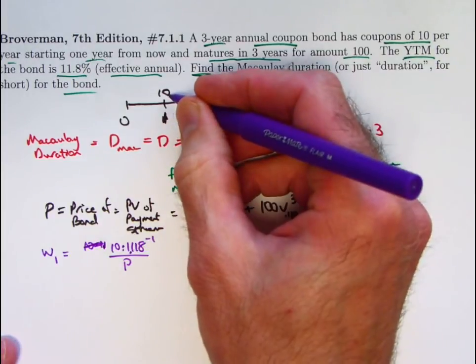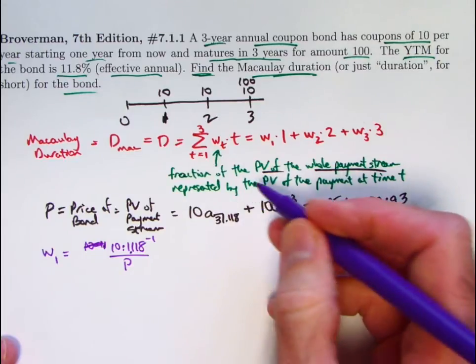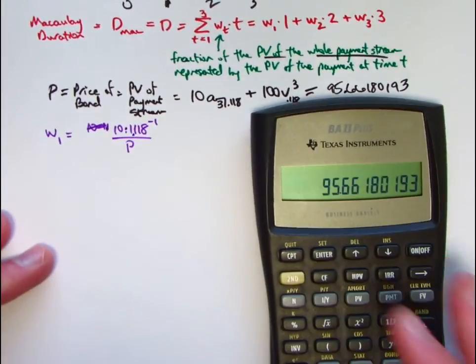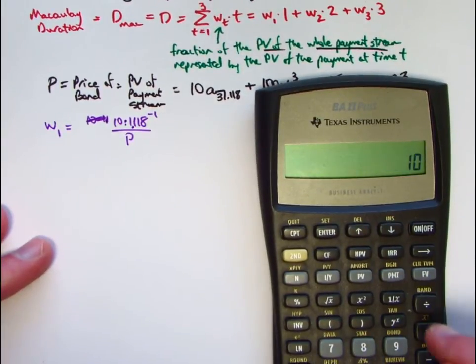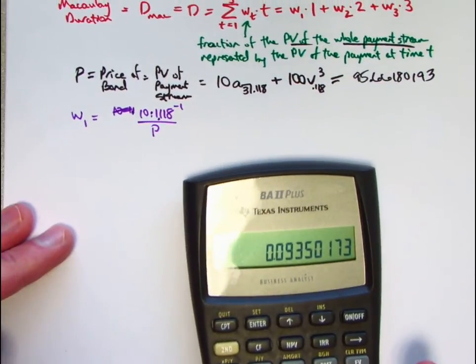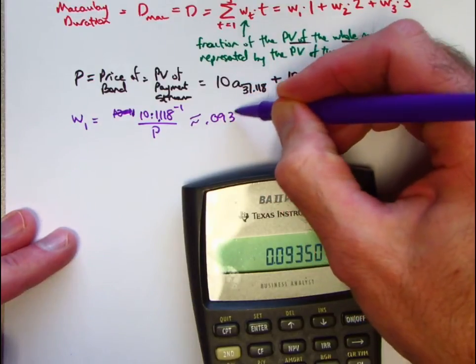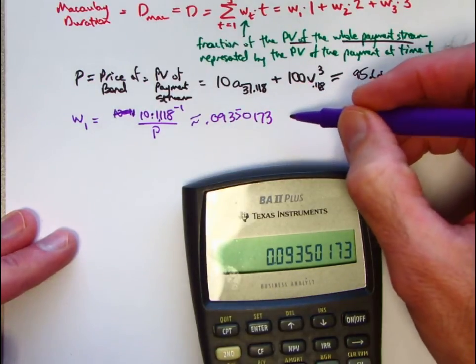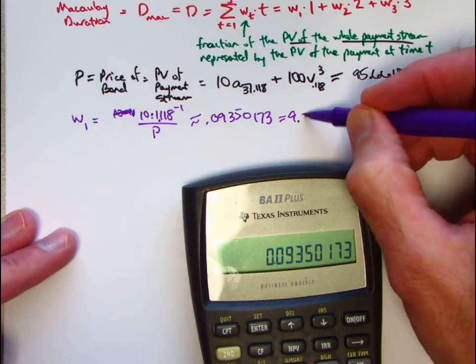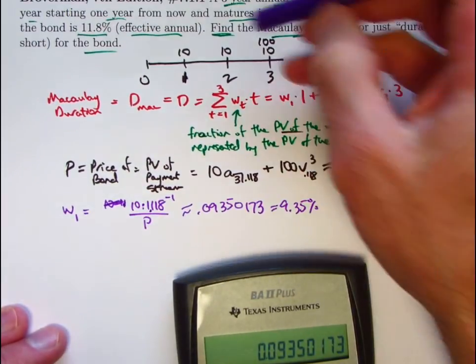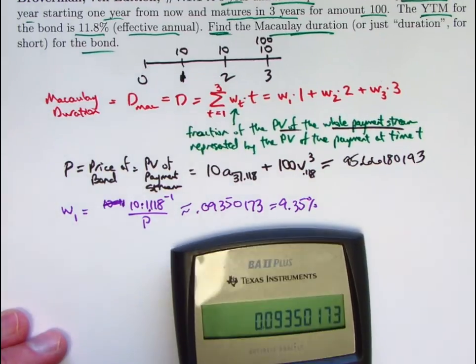I want the fraction, the ratio of that present value, compared to the whole payment stream. I get to divide by the P I just found, which is in register 0. Say, take 10 and divide by 1.118 and get this. Divide that by what's in register 0. This is about 0.0935. I will go ahead and write more decimal places. Okay, that could be thought of as a percent, by the way. 9.35% of the total weight of the present values of all the payments is made up by the present value of the payment at time 1. Okay, I think I'll store that in register 1.